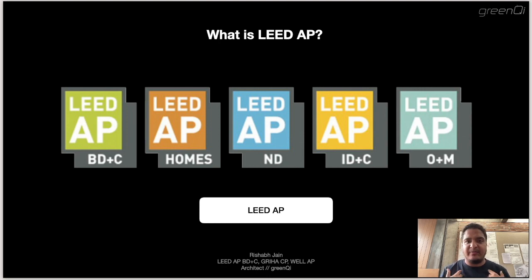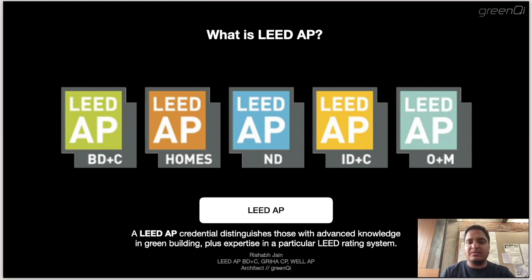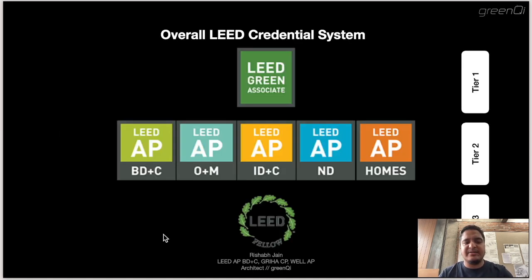A LEED AP, or LEED Accredited Professional, is a credential given to a person who has advanced knowledge in green building plus expertise in a particular LEED rating system. There are broadly five LEED specialties: LEED Building Design and Construction (BD+C), primarily for architects; LEED Homes for rating homes; LEED Neighborhood Development for complete neighborhood rating; LEED Interior Design and Construction, primarily for interior designers; and LEED Operations and Maintenance for optimizing existing building performance.